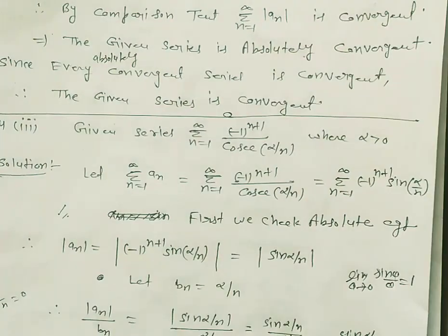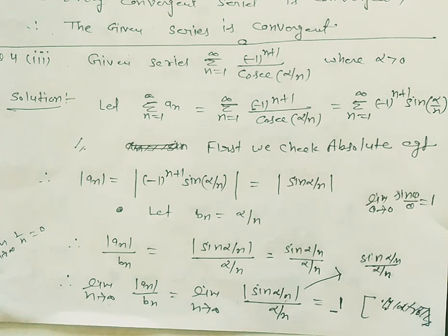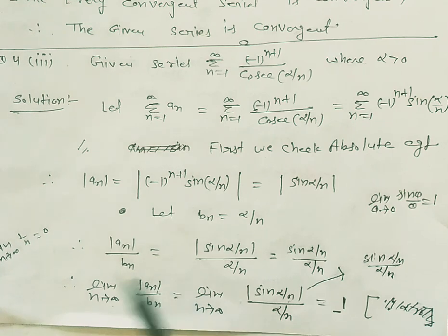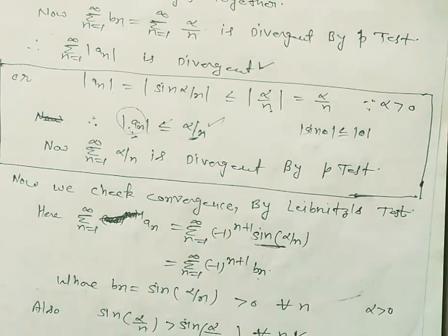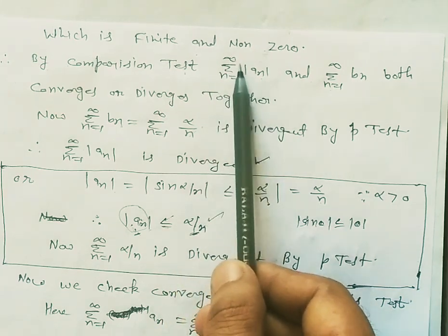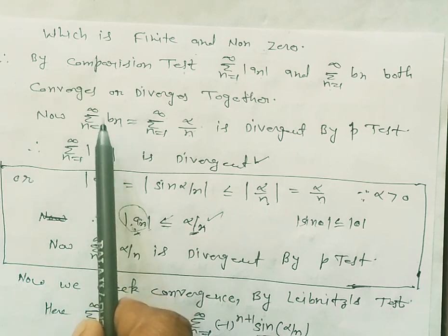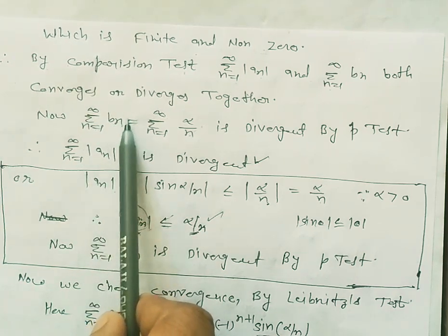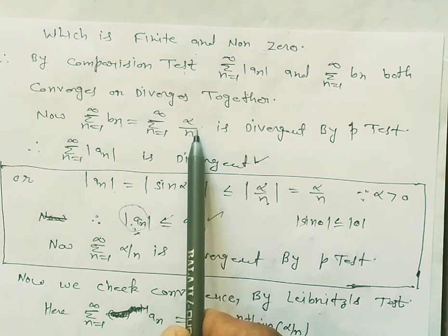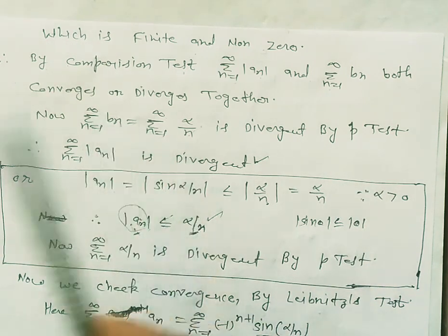Since limit n→∞ of |a_n|/b_n = 1, which is finite and non-zero, by the limit comparison test, summation of |a_n| and summation of b_n both converge or diverge together. Now b_n = α/n. Summation of α/n is divergent by the p-test (p=1). Therefore, summation of |a_n| is also divergent.